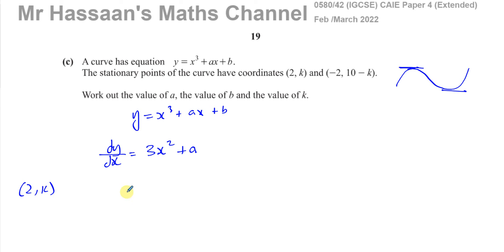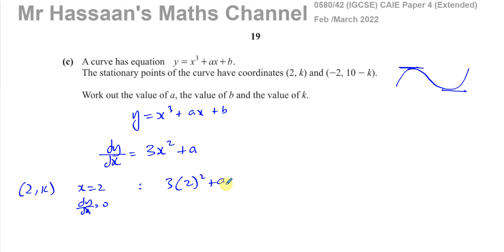Since the point (2, k) is a stationary point, dy/dx equals zero when x equals 2. So 3 times 2 squared plus a equals zero, which means 3 times 4, which is 12, plus a equals zero. Therefore a is equal to negative 12.